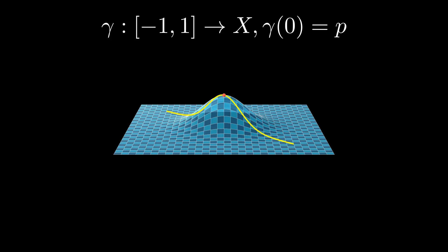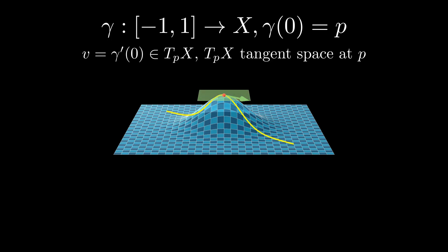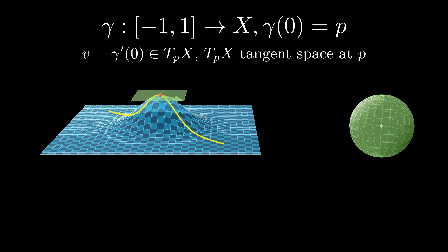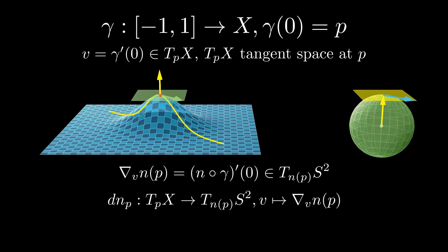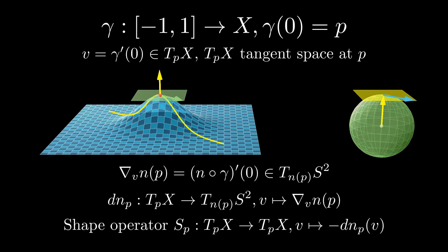To compute a directional derivative, we examine a curve passing through the point of interest at 0. The derivative of this curve at 0 gives a tangent vector. We then evaluate the Gauss map along the curve and differentiate it. The derivative depends only on the tangent vector and produces another tangent vector on the unit sphere. This value is the directional derivative. We obtain a mapping from a tangent space to another, called the differential of the Gauss map. These two tangent spaces have the same normal vector, meaning they are parallel, which allows us to identify the second tangent space with the first. And so we get a map called the shape operator, which takes a tangent vector and gives another tangent vector in the same space.